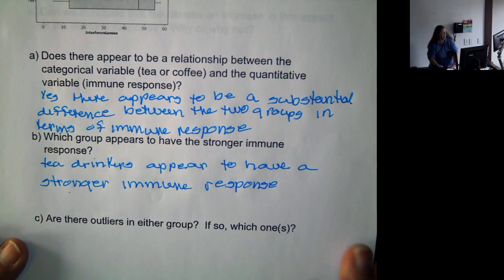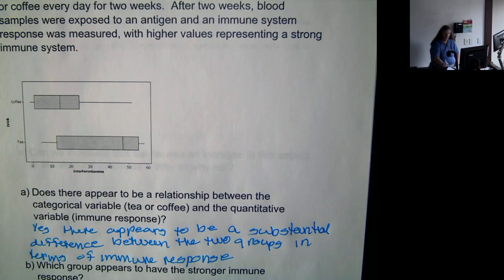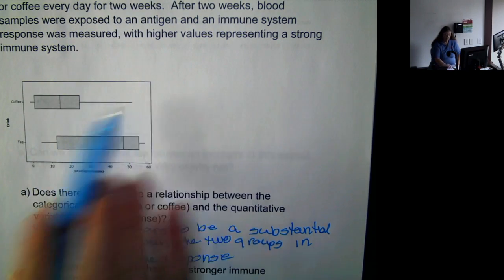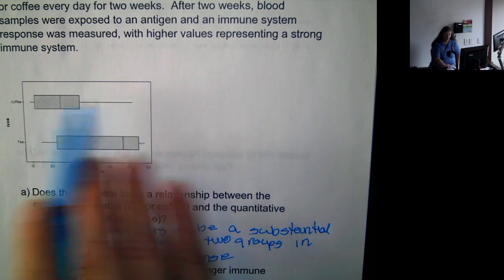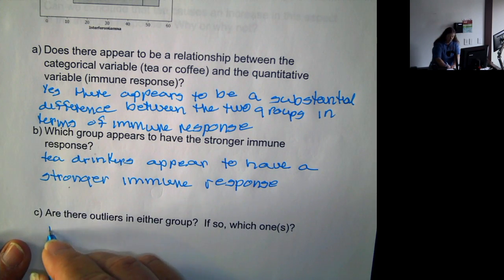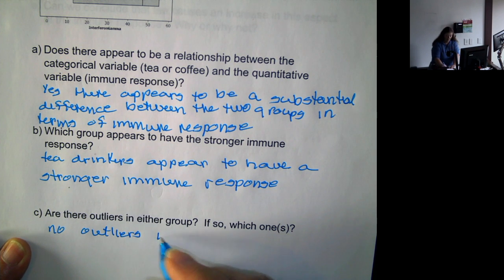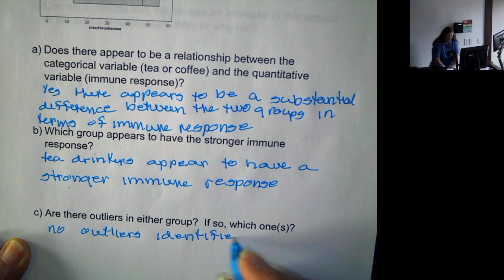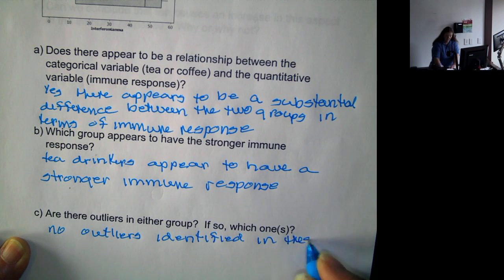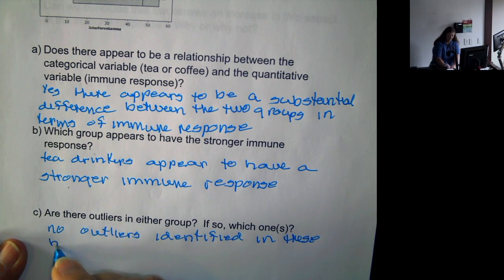Now, we have the question, are there outliers in either group? Well, if we look at the graph, there are no outliers identified. So there are no outliers identified in these box plots.